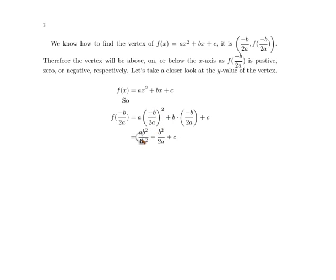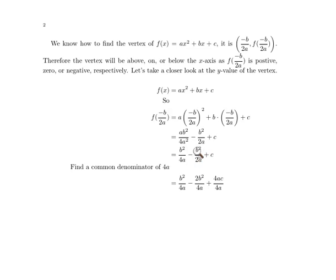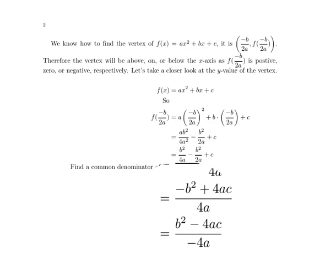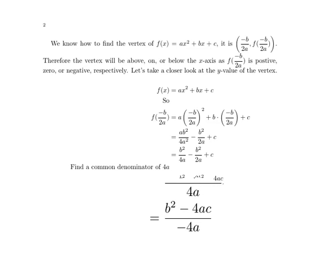We need to square -b/(2a), which gives b² over 4a — it becomes positive because we're squaring it. Now let's get a common denominator. First, let's cancel the a's. The common denominator is going to be 4a. We multiply the second fraction by 2 top and bottom, and the third term by 4a top and bottom. Adding the fractions gives us that result. Now we'll combine like terms. To make this consistent with something we'll do later, I'm going to rearrange this by multiplying the top and the bottom by -1. So what we've found is that the y-value of the vertex is (b² - 4ac) / (-4a).